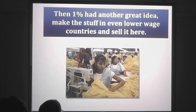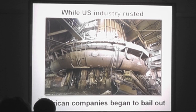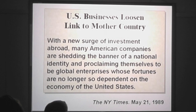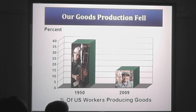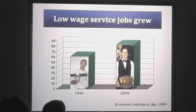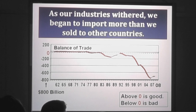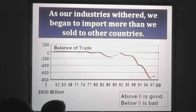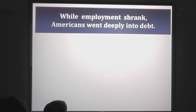Then the 1% had another great idea: make the stuff in even lower-wage countries and sell it here. While U.S. industry rusted, American companies began to bail out — like bailing out of an airplane. The New York Times said: 'With a new surge of investment abroad, many American companies are shedding the banner of national identity and proclaiming themselves global enterprises.' The result is that goods production fell and low-wage service jobs began to grow. As industry withered, we imported more from other countries. And if you buy more than you sell for years, money leaves the country and people go into debt.